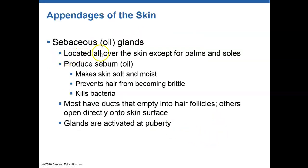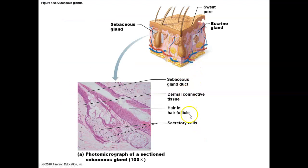Sebaceous glands, or oil glands, are located all over the skin wherever we have hair. This is because sebaceous glands release oil, or sebum, into the hair follicle. What it does is protect the skin, prevent your hair from becoming too brittle, and it can also kill bacteria. This is a photomicrograph of sebaceous glands releasing into hair follicles.